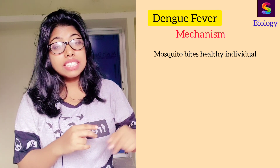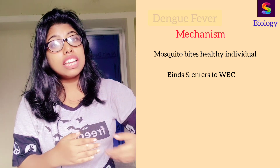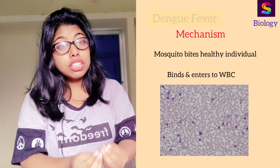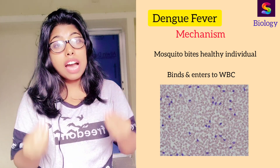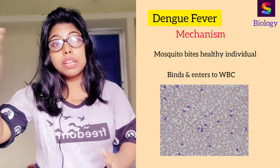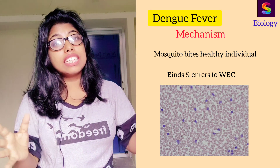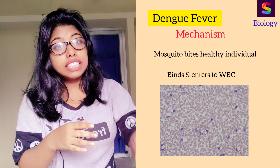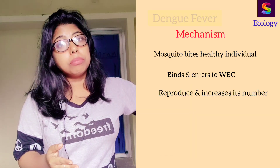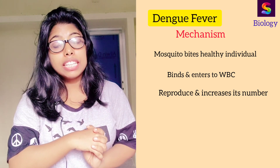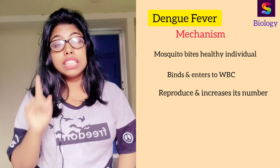An infected mosquito bites a healthy individual, and mosquito saliva — including the virus — enters the human body. The virus then binds and enters the WBCs (white blood cells) and reproduces there. The virus is clever — it enters the WBCs, which are the protective mechanism of our body, our armed forces against external pathogens. It merges with the WBCs, enters their cells, and then reproduces and increases its number.